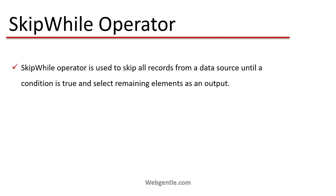The SkipWhile operator is used to skip all records from a data source until a condition is true. From a data source, if you need to skip some records but you do not know how many records you want to skip, but you know the condition — if this condition is true then the element should be skipped — in that scenario we can use SkipWhile.